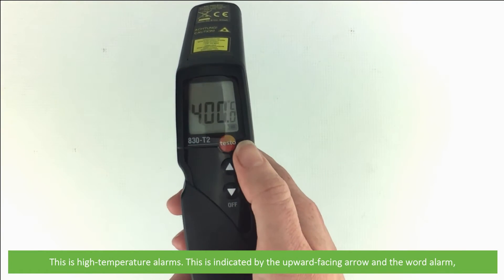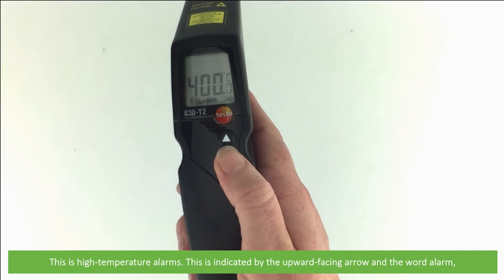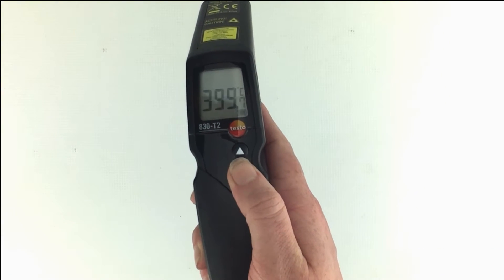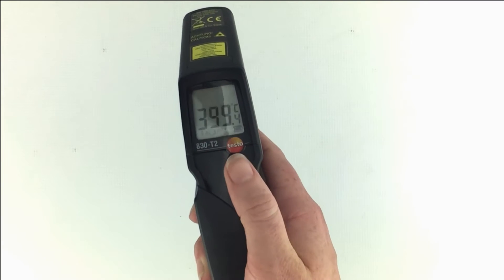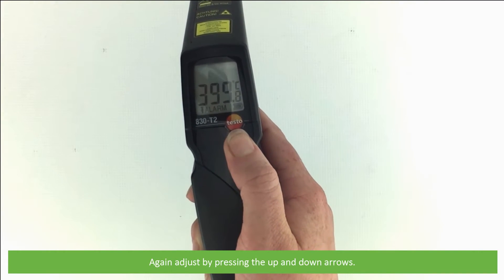This screen is high temperature alarms. This is indicated by the upward facing arrow and the word alarm. Again adjust by pressing the up and down arrows.